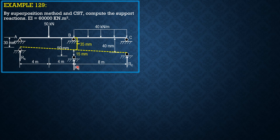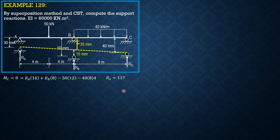Recall that the partial derivative of work with respect to the redundant force RB equals the deflection, and that deflection is negative 0.015 m. Taking summation of moments about C to express RA in terms of RB: RA times 16 plus RB times 8 minus 50 times 12 minus 40 times 8 times 4 equals zero, giving RA = 117.5 minus 0.5 RB.